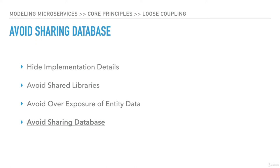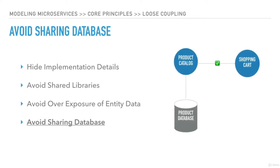Avoid sharing databases — this should be a strict no. One bounded context should always interact with another bounded context through the interface only. So if our shopping cart service needs product details, it should get the information through the API, not by connecting to the database directly. Exposing the database directly is equivalent to exposing the implementation details, and will eventually create tight coupling with consuming services.